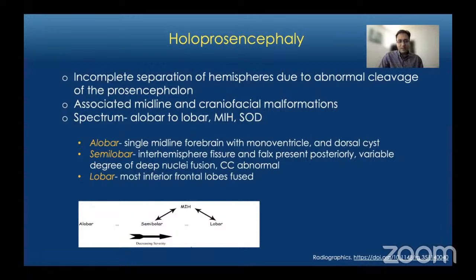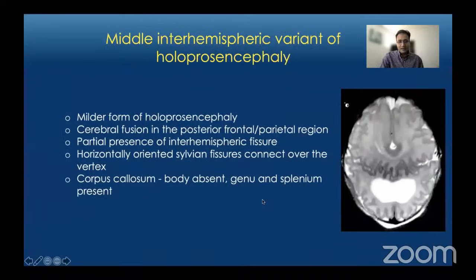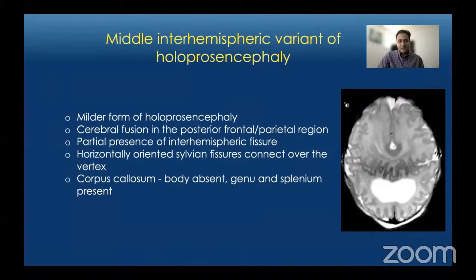In semilobar holoprosencephaly there is some hemisphere separation — the inter-hemispheric fissure is partly present posteriorly with fusion anteriorly, and variable degree of deep nuclei and thalamic fusion. Lobar holoprosencephaly is the least severe form with only fusion of the most inferior frontal lobes. The middle inter-hemispheric variant has cerebral fusion in the posterior frontal or parietal region, with partial inter-hemispheric fissure anteriorly and posteriorly, a horizontally oriented sylvian fissure extending across the midline, and an abnormal corpus callosum with an absent body while the genu and splenium are present.